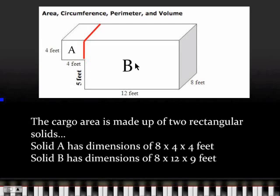Over here is the other part - solid B, rectangular solid B. It has a length of eight feet, a width of twelve feet, and a height of five and then four more, which is nine feet. So it's eight by twelve by nine feet. I've got the dimensions - the length, width, and height for each of the two solid figures, the rectangular solids that make up this cargo area.